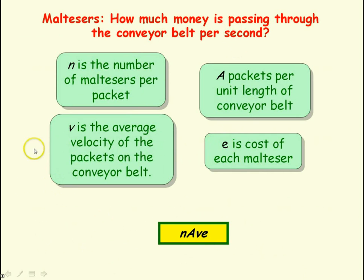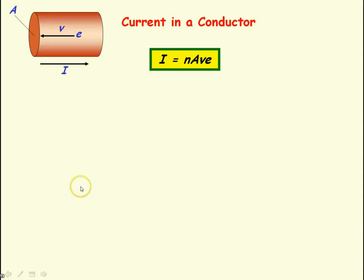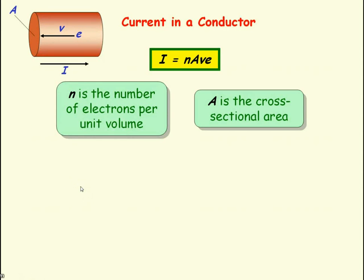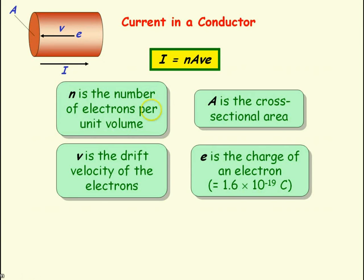Considering the current in a conductor, we use the same letters but now applied to electrons. N is the number of electrons per unit volume of conductor (electrons per cubic metre), V is the drift velocity of the electrons in the conductor, A is the cross-sectional area of the conductor, and E is the charge of each electron. Multiplying these four quantities together — N, A, V, E — gives the current in the conductor.